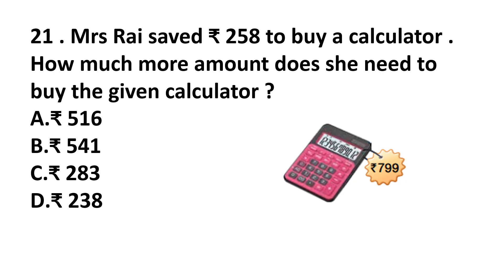Question number 21. Mrs. Rai saved Rs. 258 to buy a calculator. How much more amount does she need to buy the given calculator? The given cost of the calculator is Rs. 799 and she saved Rs. 258. So Rs. 799 minus 258: 9 minus 8 is 1, 9 minus 5 is 4, and 7 minus 2 is 5. So the answer is option B, Rs. 541.